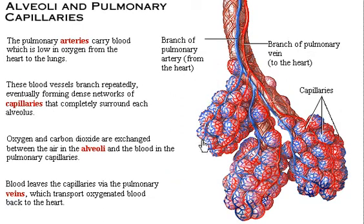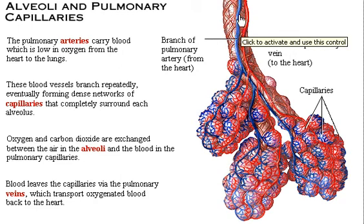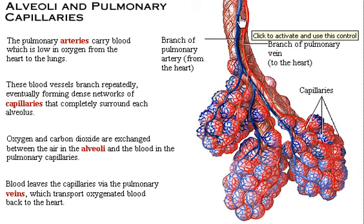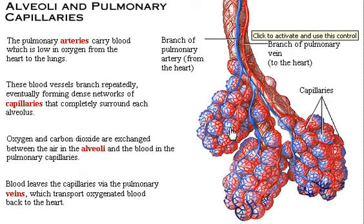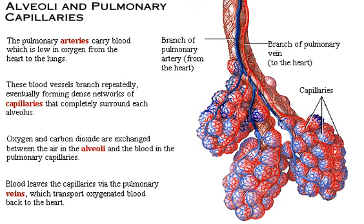Here we see the gas exchange of the alveoli. The pulmonary arteries deliver blood to the lungs, gas exchange occurs at the lungs, and then the pulmonary veins take the blood back to the heart. Blood from the heart comes through the pulmonary arteries, which branch into smaller capillaries that surround each alveolus in a network. Gas exchange occurs at each alveolus, the blood becomes oxygenated, and this oxygenated blood is delivered back to the heart by the capillaries.